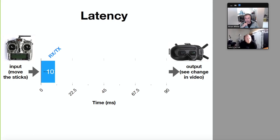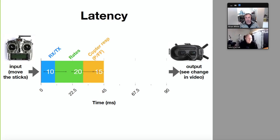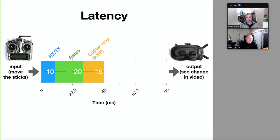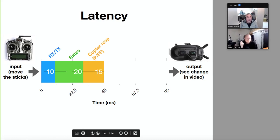Depending on what system you're using — Crossfire, ExpressLRS, whatever — they'll all have different latency. Let's just give that a number of say 10 milliseconds. Rates are another component a lot of people don't think about, but depending on how you have your center stick configured, this is going to play a big role in your experience of latency — let's say 20 milliseconds. The copter response also takes some time for the propellers to generate thrust and actually move the copter, and things like P and feedforward will play into this — call it 15 milliseconds.